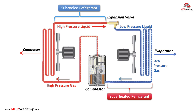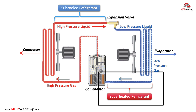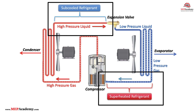Here's a quick side-by-side comparison. Superheat is measured on the low-pressure side, after the evaporator. Subcooling is measured on the high-pressure side, after the condenser. Superheat protects the compressor. Subcooling protects the metering device. Both help ensure your system is charged properly.